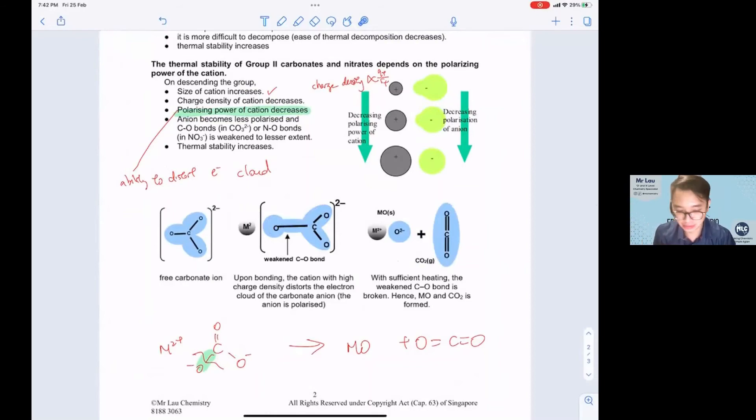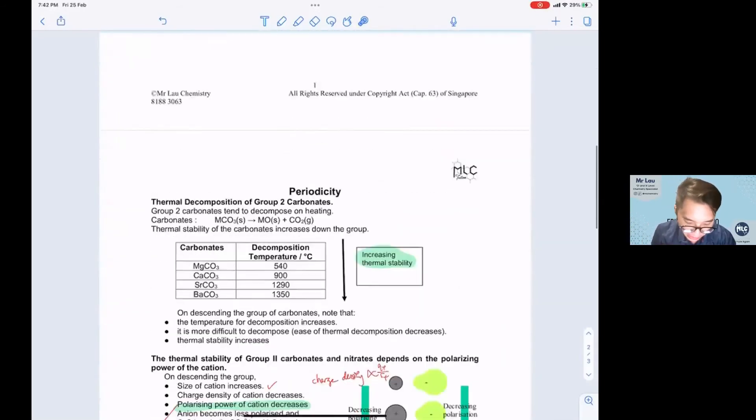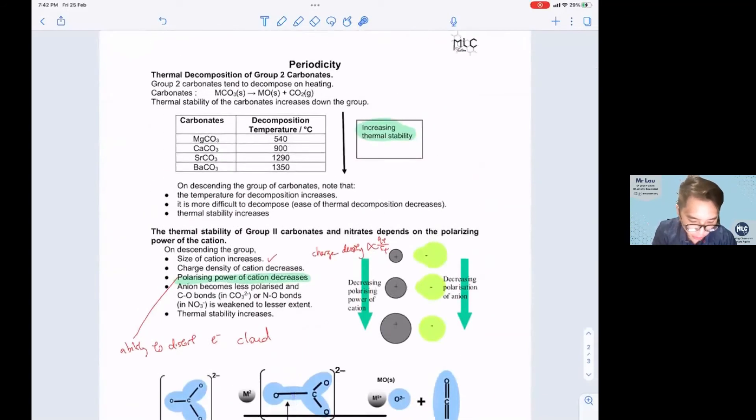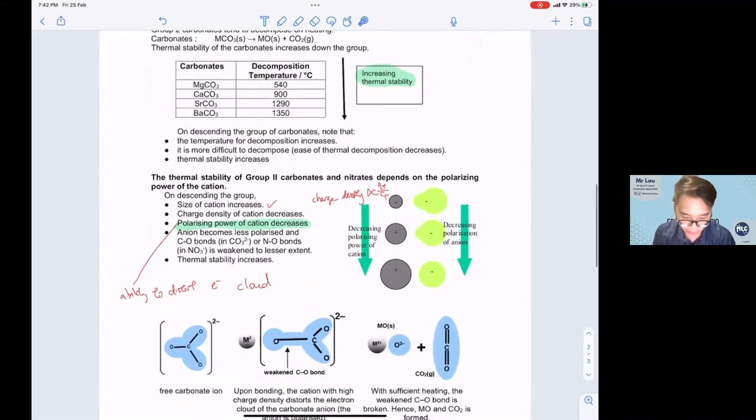Hence this bond becomes stronger or is weakened to a lesser extent. Therefore you will need more energy to break this bond, which explains why down the group your decomposition temperature will increase. You need more energy to break the CO bond because of the weaker polarizing power of the cation. Therefore, the thermal stability of group 2 carbonates and group 2 nitrates increases down the group.